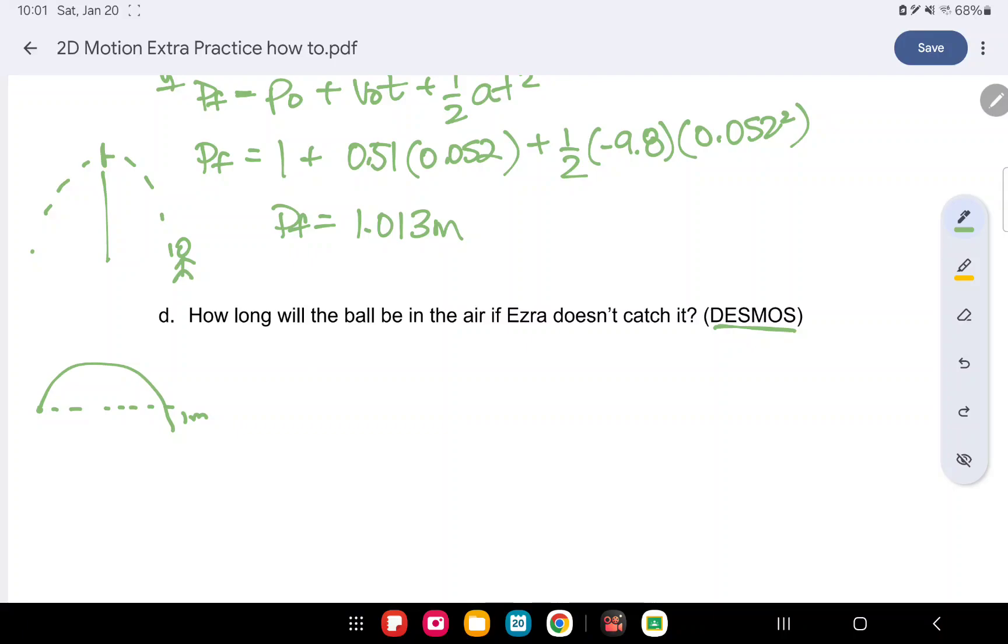So how long will the ball be in the air if Ezra doesn't catch it? So let's use our equation again in our Y. So PF equals P0 plus V0T plus one half AT squared. Our PF is going to be zero and our P0 is going to be one still. So our equation really doesn't change from above. However, we now don't know the time. So we're going to keep our T as our variable. And just to make that easy, negative 4.9T squared. So this is what we're going to put into Desmos. And on the quiz, I will write, use Desmos. And you're going to go and use Desmos.